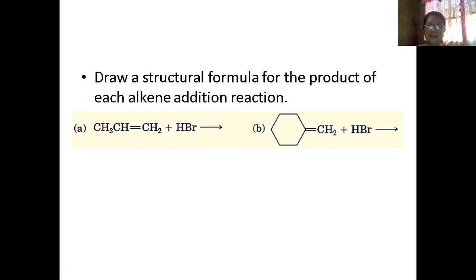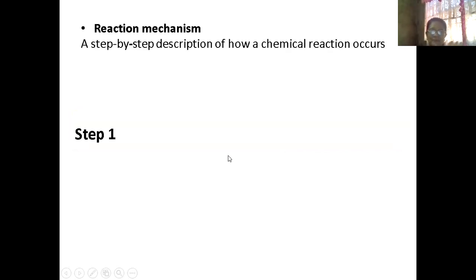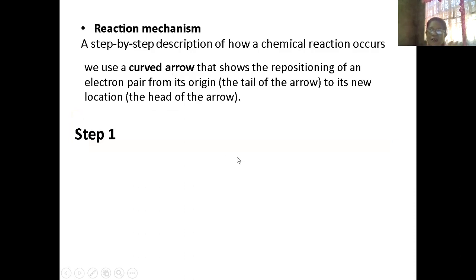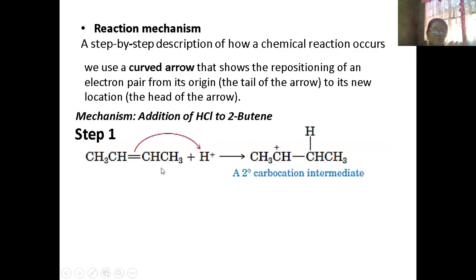For another example: your hydrogen will attach to the richer one, and your bromine will attach to the other portion. The mechanism uses a curved arrow. In step one, for the mechanism of hydrogen chloride with 2-butene: the hydrogen attacks the double bond. The carbon that gains the hydrogen becomes the carbocation — positively charged. This is the secondary carbocation.